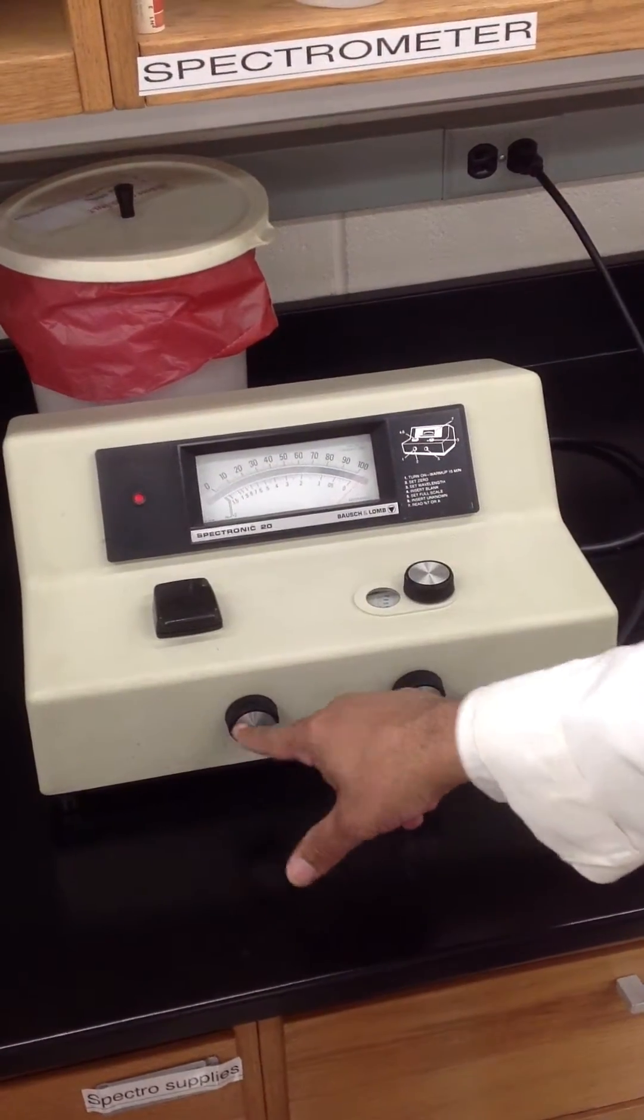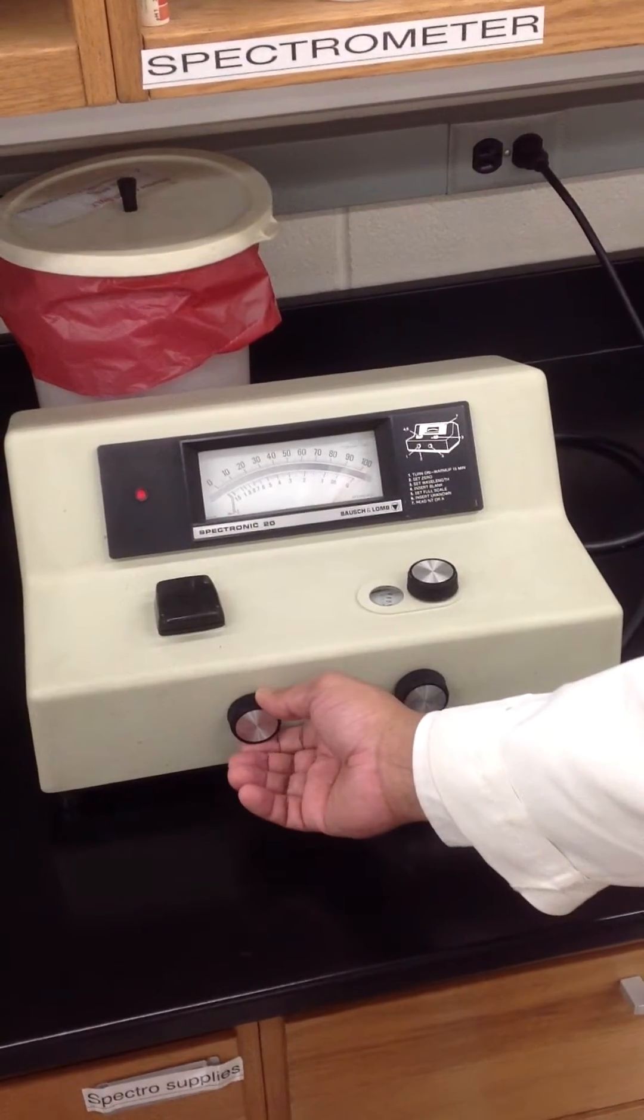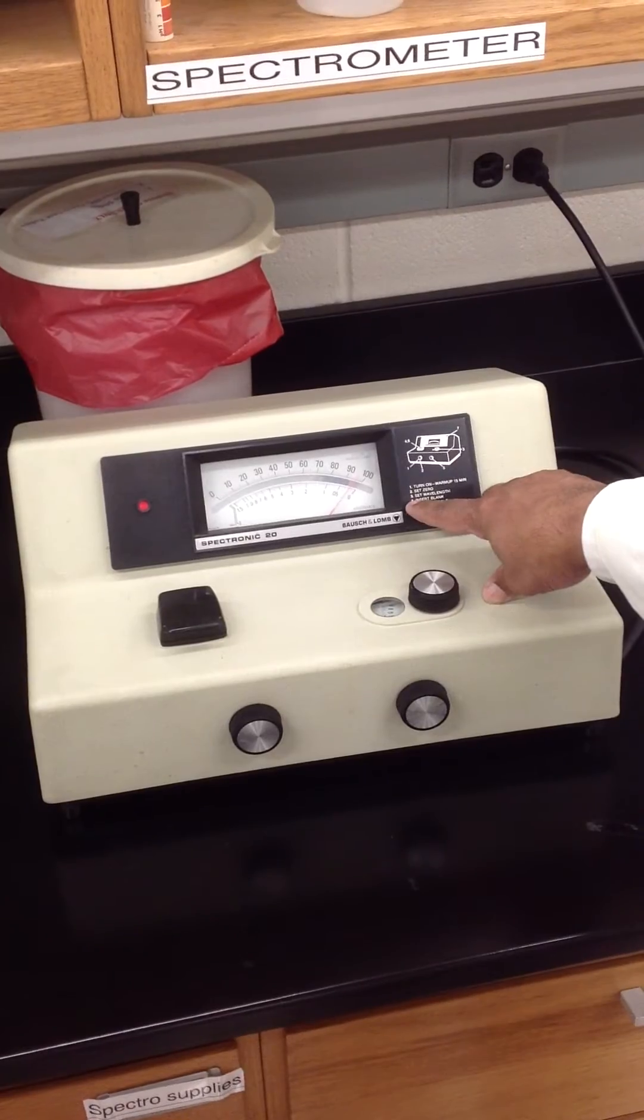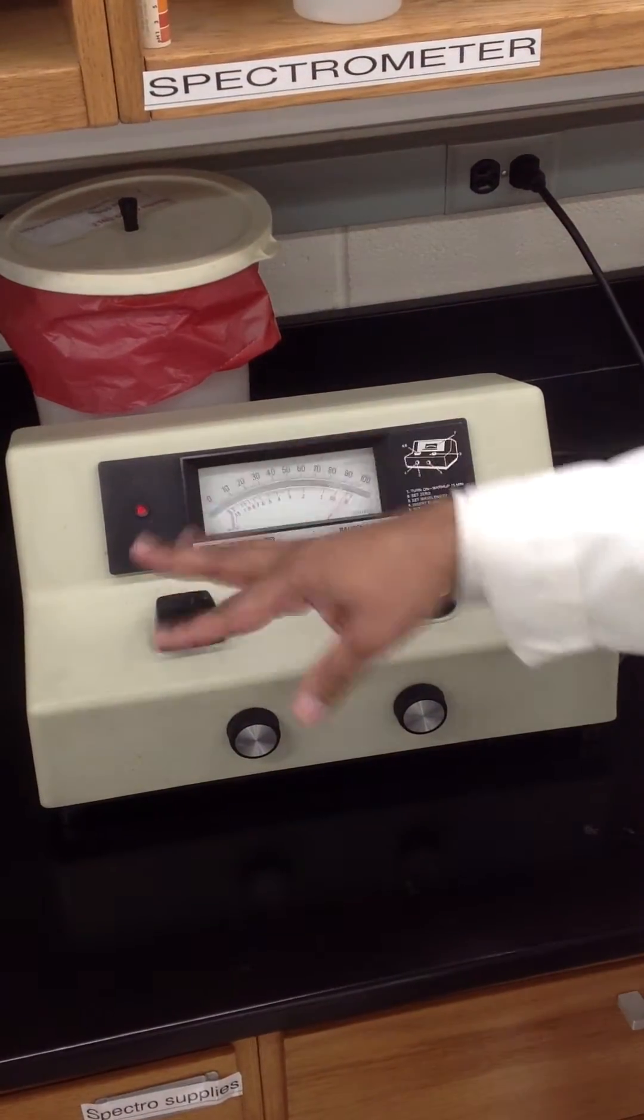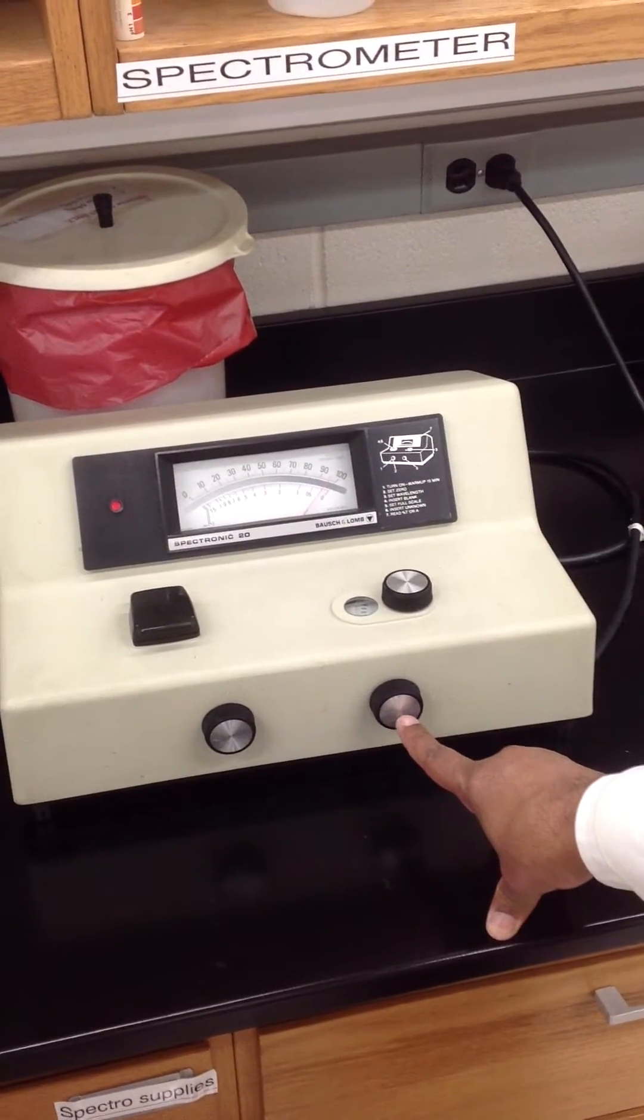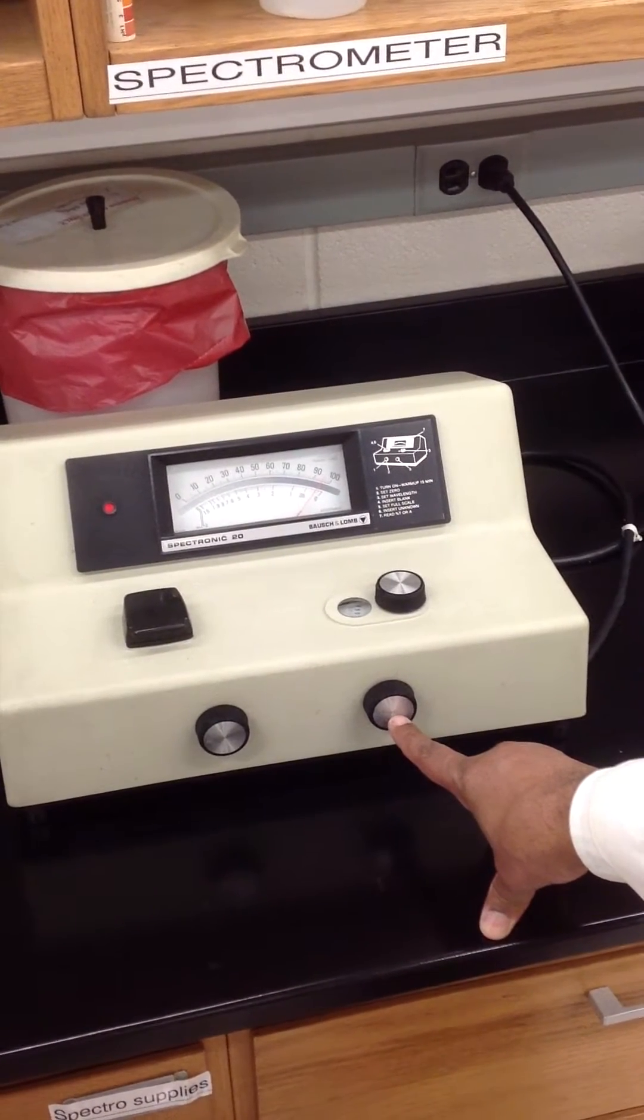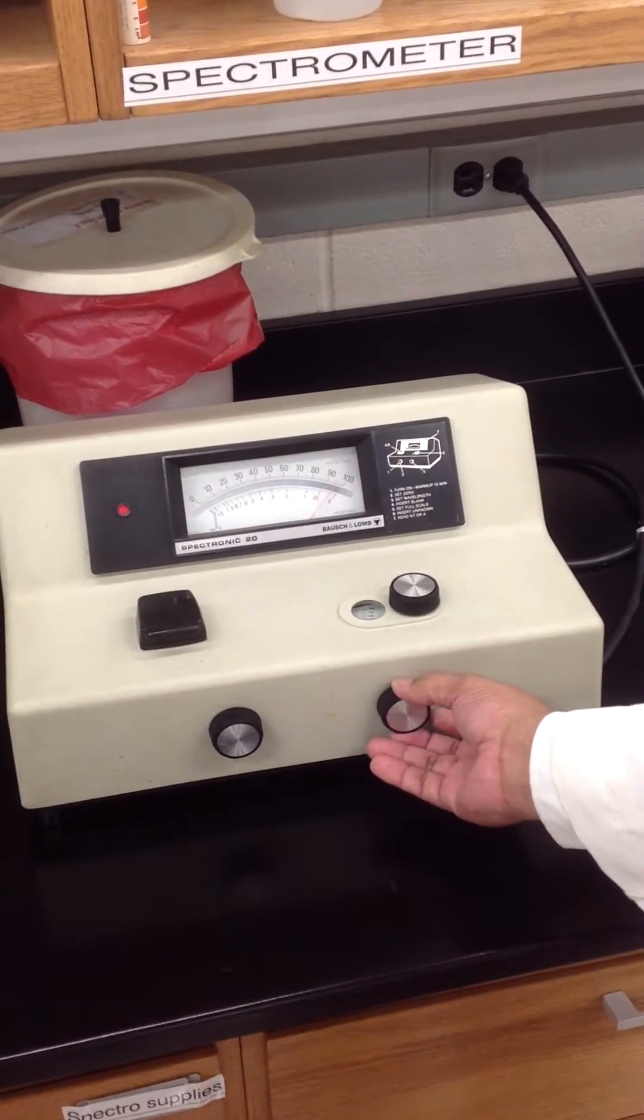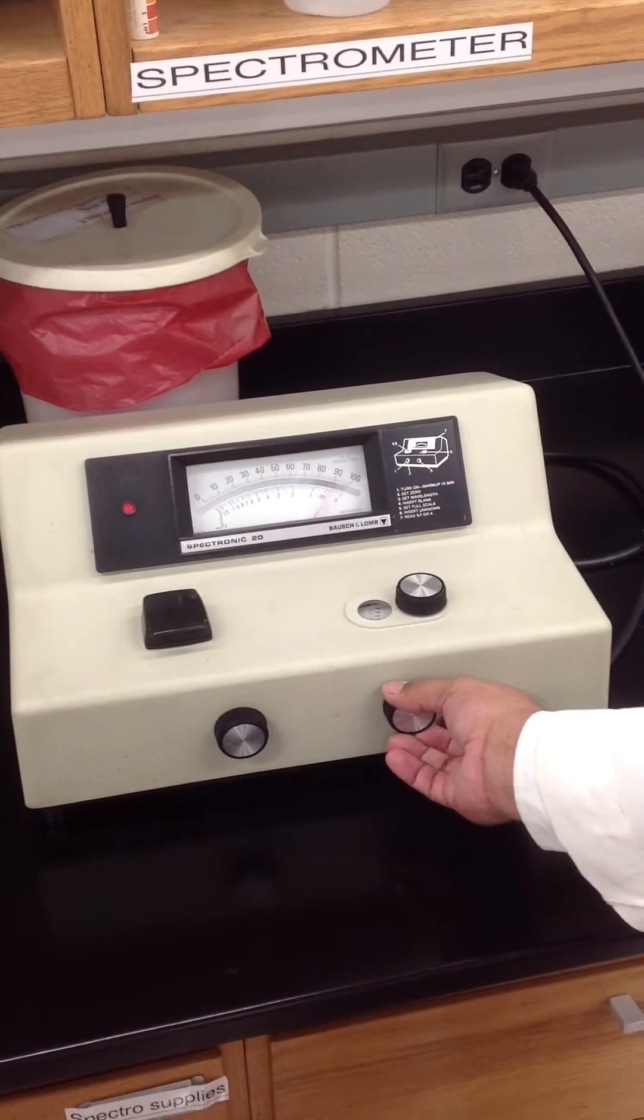Don't worry about that. To insert your blank. So when you turn that on, you can play with that if you want and put it wherever you are. This is actually to, when you put your unknown, to set to full scale, which is actually the one you put it to full scale. So this is actually zeroing it.